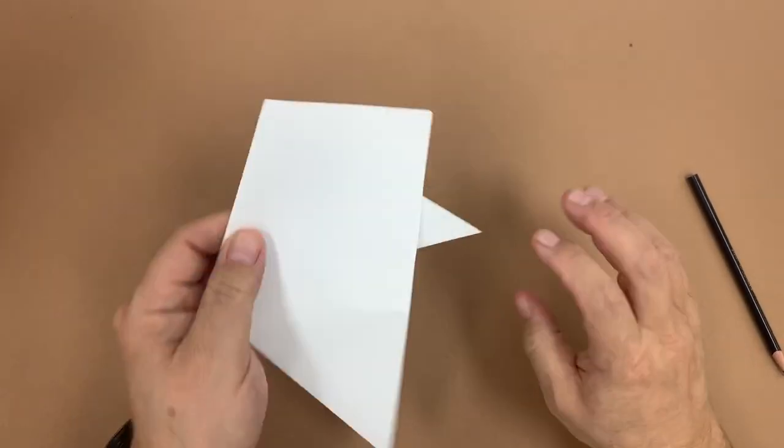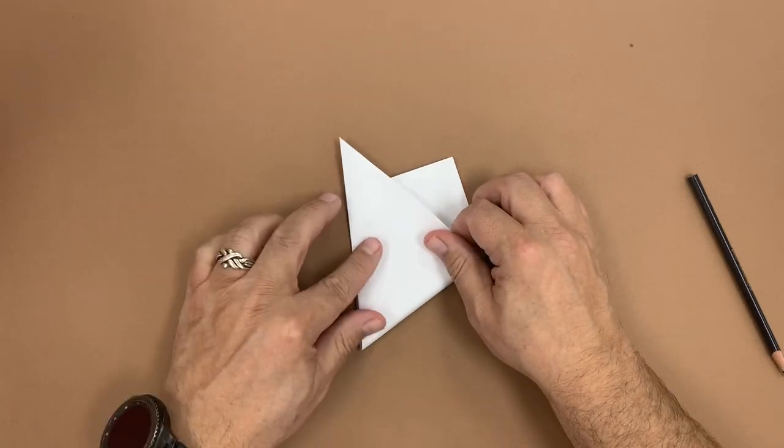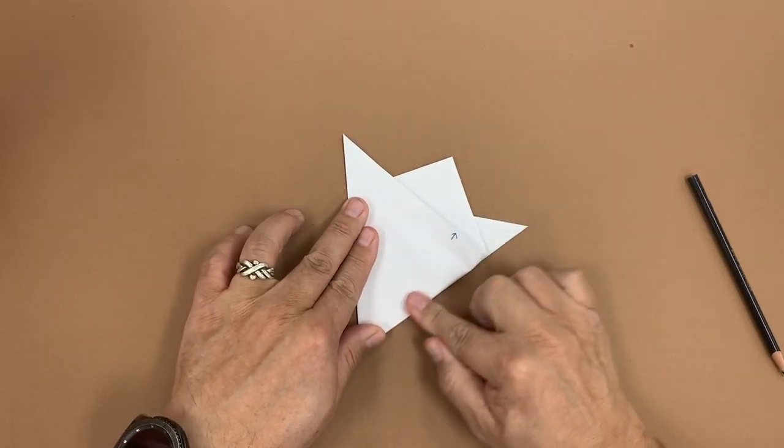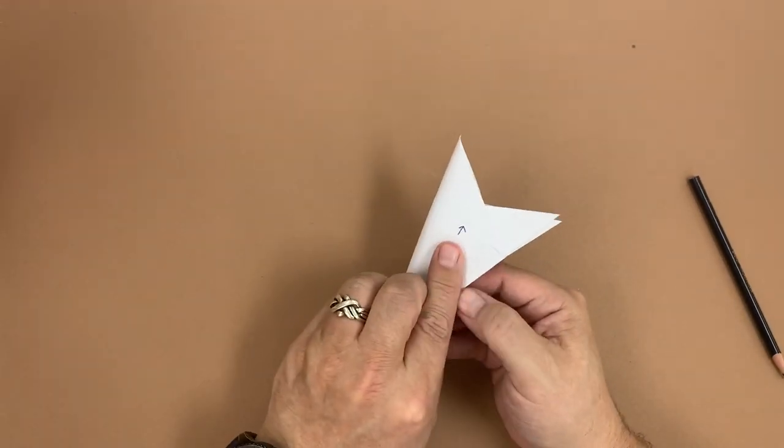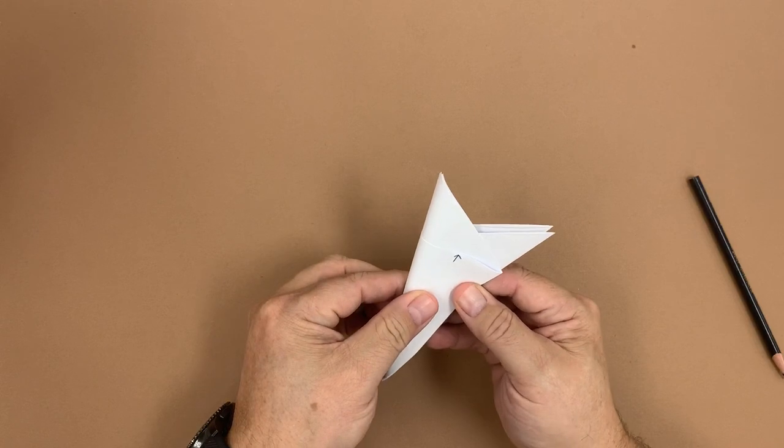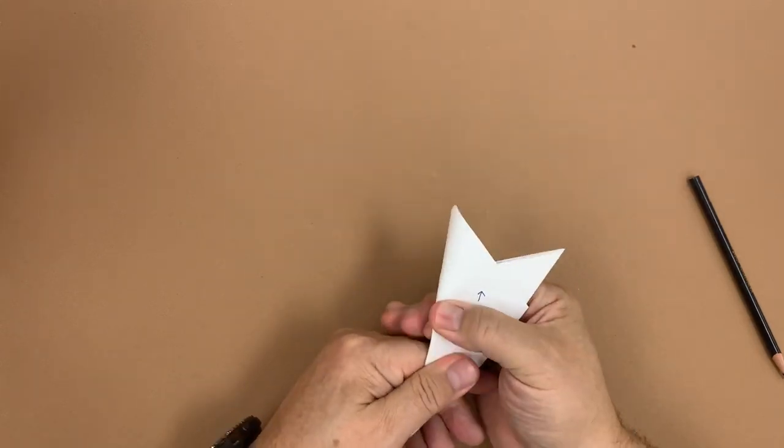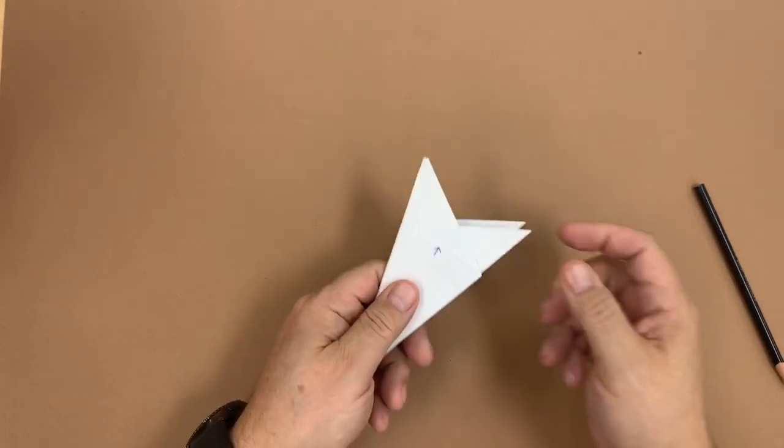Now we turn it over, and this side should just meet this side. And then we fold the whole thing in half. And we have the folds done for our six-pointed star.